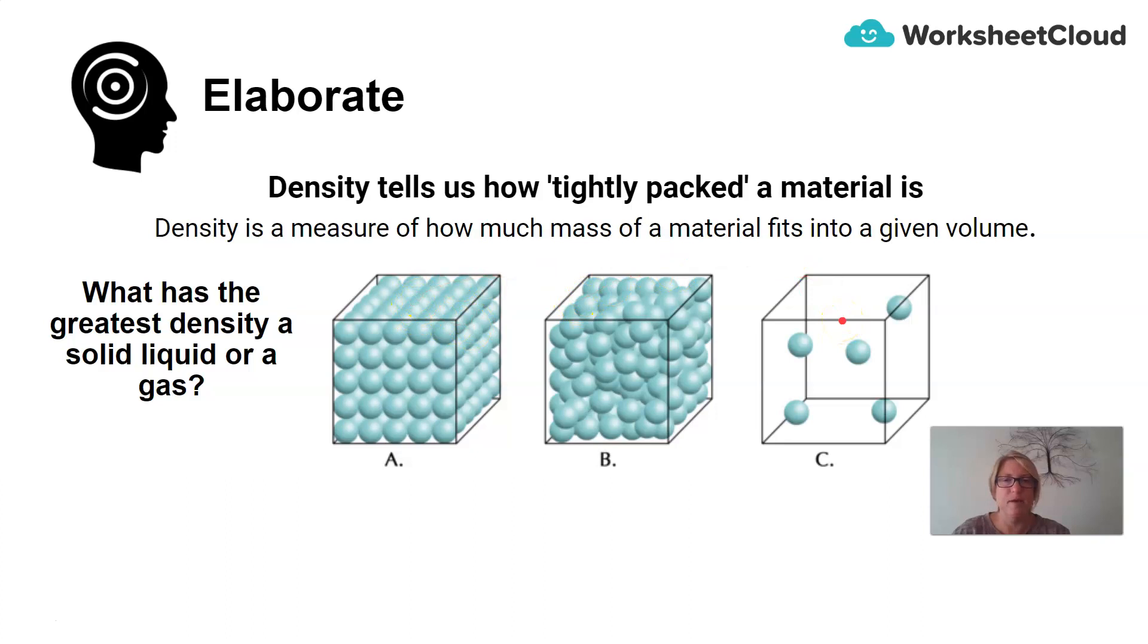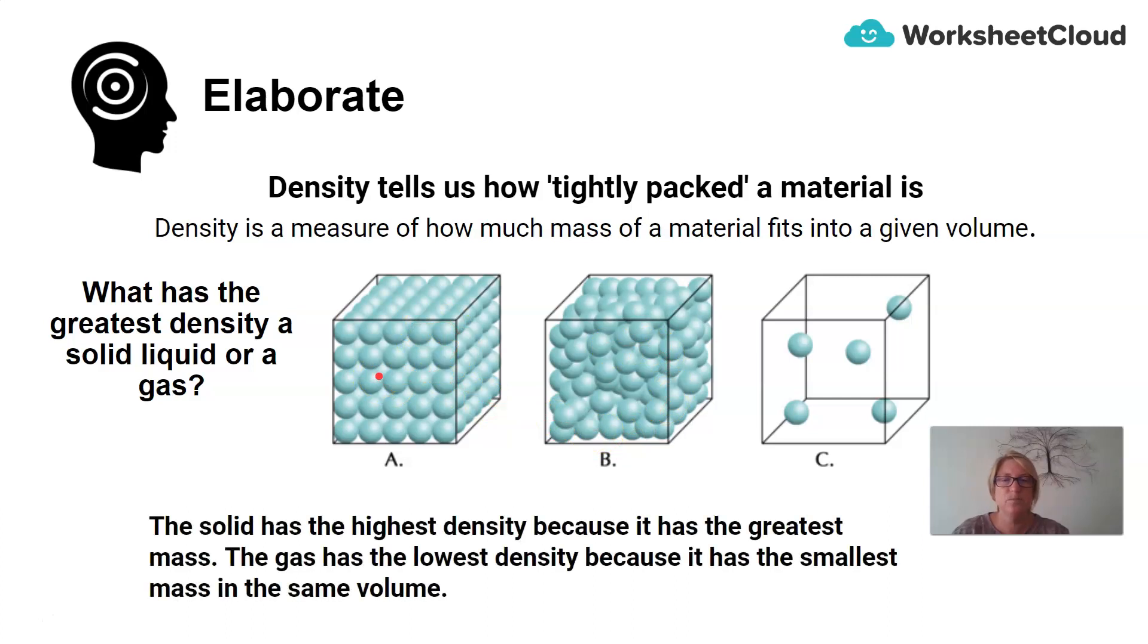But if we have a look, how many particles do we find? And how does the number of particles in a gas compare with the number of particles in a liquid comparing with the number of particles in a solid? The solid has the highest density because it has the greatest mass. Remember, density equals mass divided by volume. And in this case, the volume for all three of these cubes is the same. So what will differ between cube A, B, and C is the number of particles. And the number of particles all have a mass.